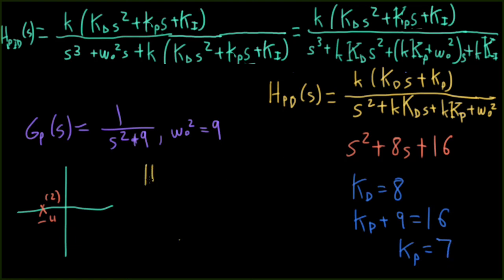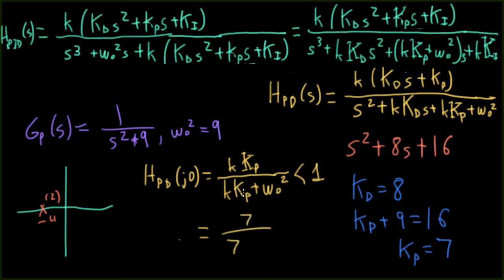But now let's think about how it tracks. So if I were to plug in j zero for s here, I wind up with little k, kp over little k, capital Kp, oh, this was such a bad choice of notation on my part, plus omega naught squared. So this is going to be something less than one. So this can't track a unit step function nicely. Now, let's see how bad it happens to be in this particular example. Well, kp is seven, and then kp is seven, and then I add nine for my omega naught. So that's seven over 15. So that is really not good. You put one in and you get something substantially less than one out. So that motivates going for pid control.